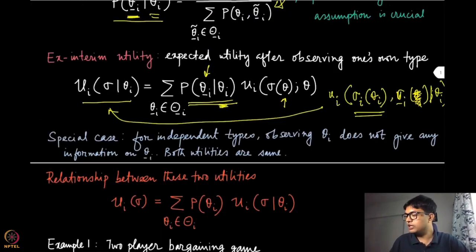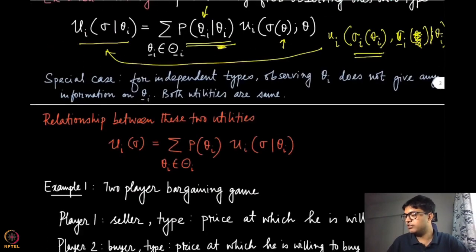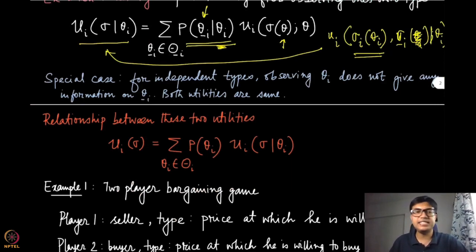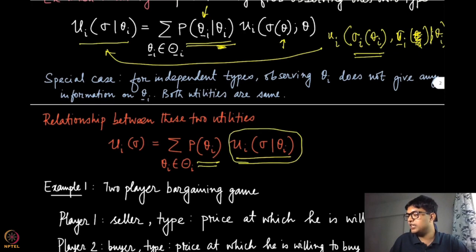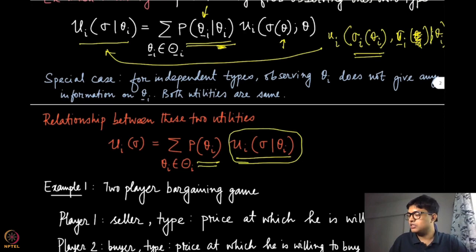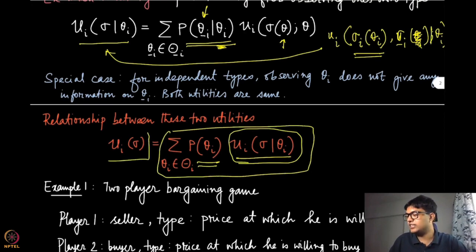Now let us look at the relationship between these two utilities. The ex interim state gives more information to the player. If you take the expectation with respect to p(theta_i) for player i over the ex interim utility, what you get is the ex ante utility.